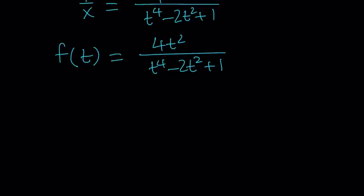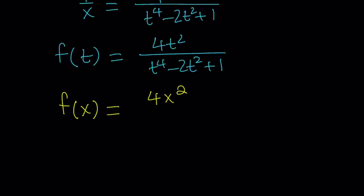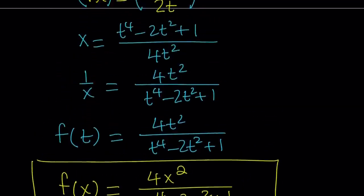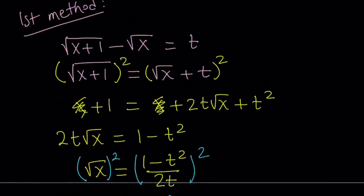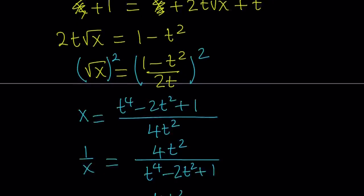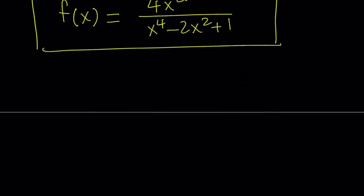How do I find f(x) from here? I can replace t with x since these are dummy variables — we can keep changing them as long as we do the same thing on both sides. This gives us f(x) equals 4x² divided by x⁴ minus 2x² plus 1. You can plug the x value in to verify you get the same expression on the right-hand side.